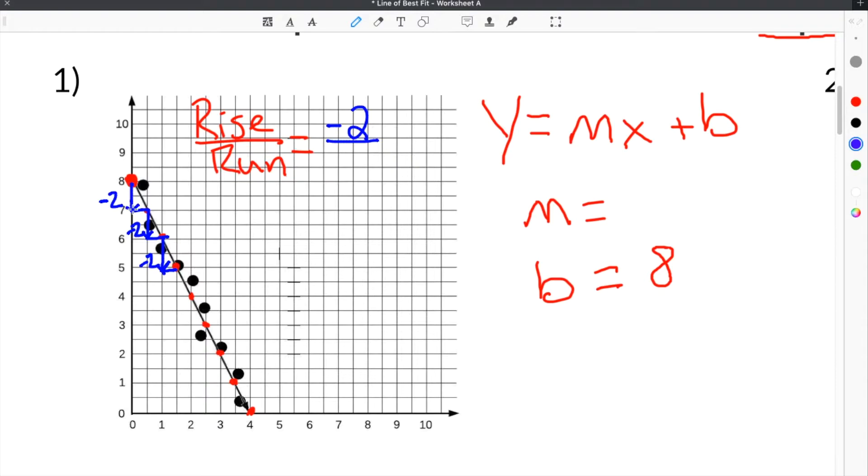Then we have to find the run, or how much we go over by. In the case of this example, we go over one here, then we go over one here, then we go over one here. So a run is going to be one. And then if you simplify this, negative two divided by one is just negative two. So our slope is negative two.